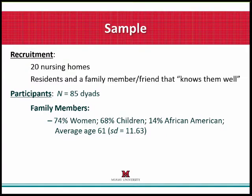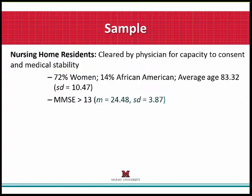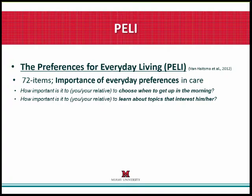We recently completed a study where we were looking at 20 different nursing homes and resident-family member dyads that participated. The nursing home residents were cleared by a physician for capacity to consent and were medically stable — so we were talking with nursing home residents who could report on their own preferences. This was using the PELI tool itself, which is now a 72-item tool that helps us assess the importance of everyday preferences in care.